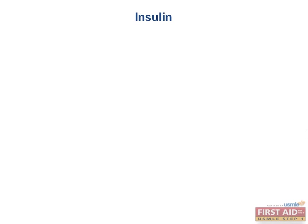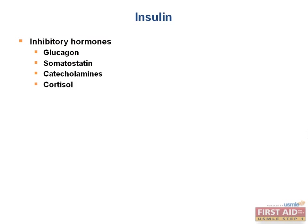The human body does its best to maintain blood sugar levels. When there is too much glucose in the blood, the body increases secretion of insulin to lower it. But if there is not enough glucose, the body needs to turn off insulin secretion. Two hormones released by the pancreas that inhibit insulin are glucagon and somatostatin — somatostatin actually inhibits both. Two other hormones related to stress that inhibit insulin release are catecholamines and cortisol, collectively referred to as counter-regulatory hormones.